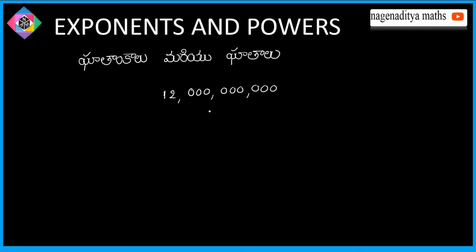So, if we write it using the exponent formula: this is equal to 12 into 10 power 9, since there are 9 zeros. This is equal to 10 power 9. Here, 10 is called the base and 9 is called the exponent.